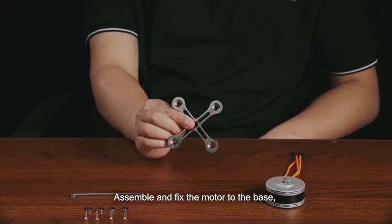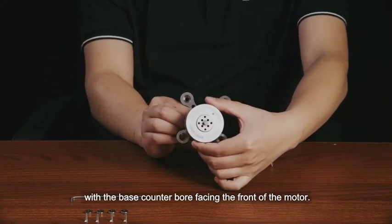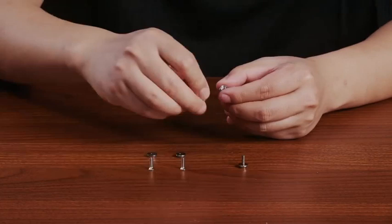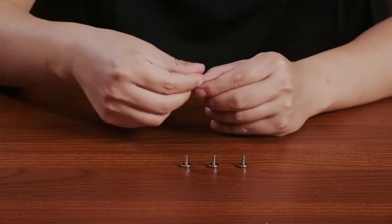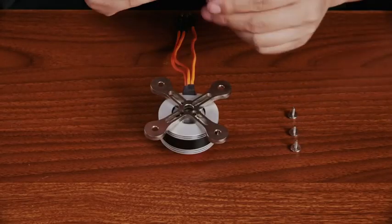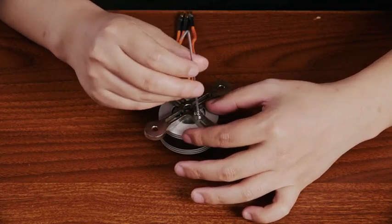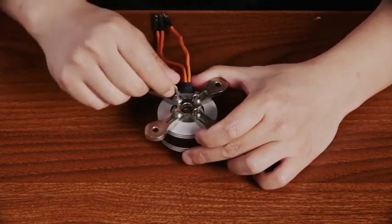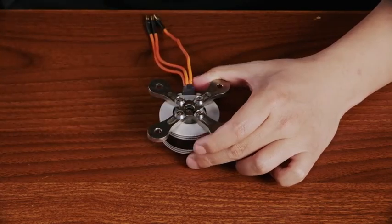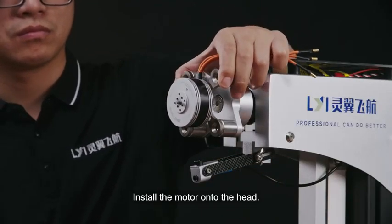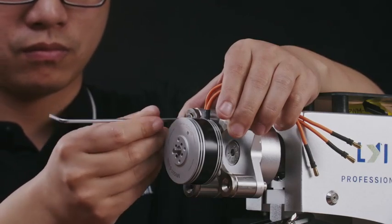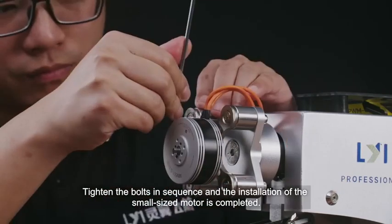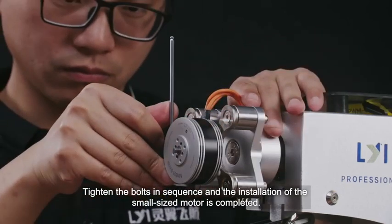Assemble and fix the motor to the base with the base counterbore facing the front of the motor. Select specialized gaskets and bolts. Install the motor onto the head. Tighten the bolts in sequence and the installation of the small size motor is completed.